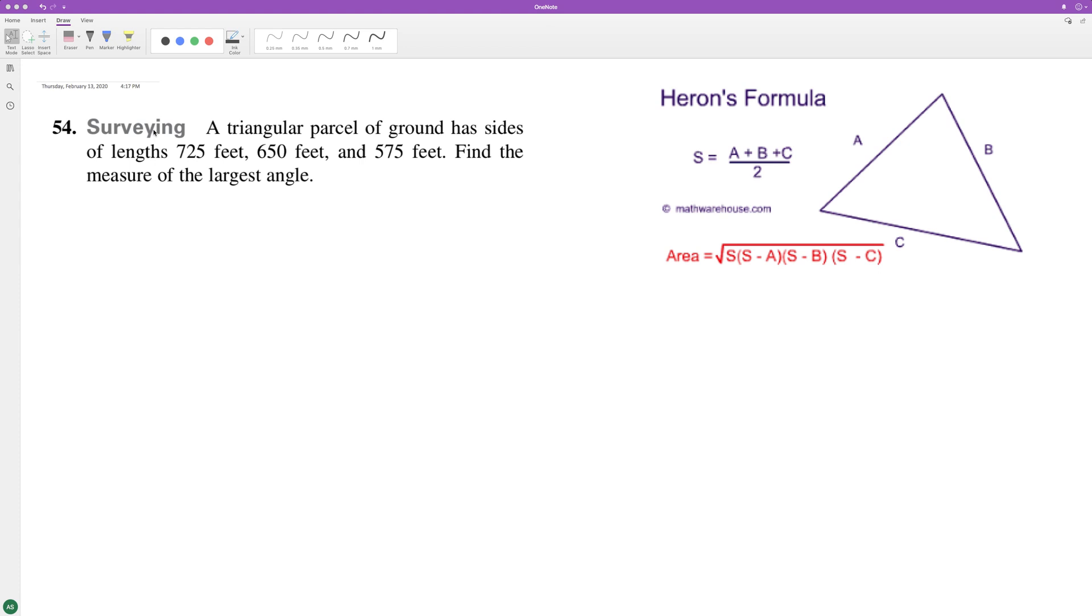A triangular parcel of ground has side lengths of 725 feet, 615 feet, and 575 feet. Find the measure of the largest angle. So I was gonna use the law of cosines. This is pretty simple.